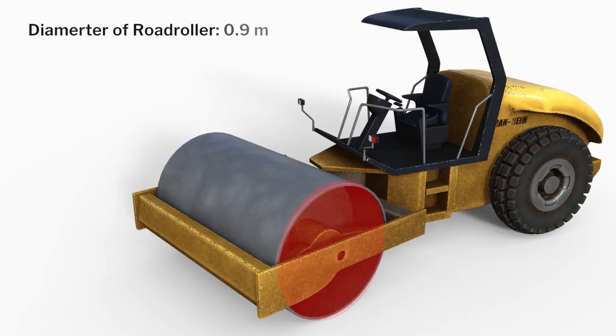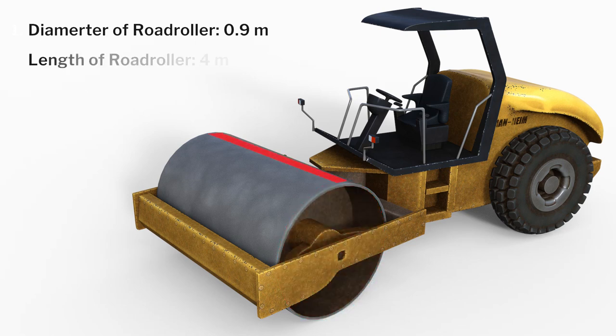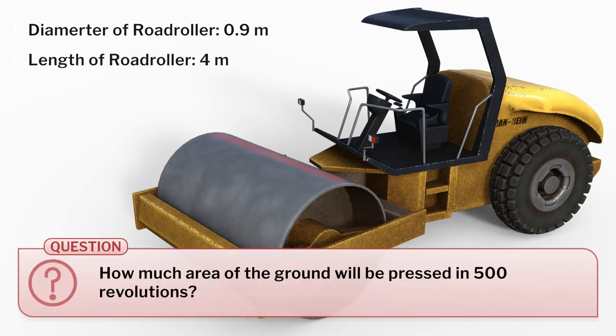After that, I stated a problem related to a real-life example: the diameter of a road roller is 0.9 meters and its length is 4 meters — how much area of the ground will be pressed in 500 revolutions? After the cylinder, I moved on to explaining the surface area of a sphere.